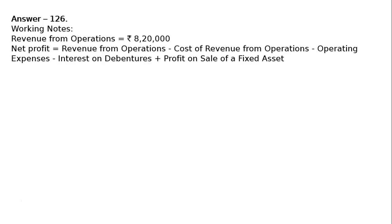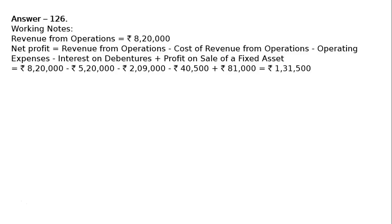Net profit is equal to revenue from operations minus cost of revenue from operations minus operating expenses minus non-operating expenses like interest on debentures, plus non-operating incomes like profit on sale of a fixed asset.